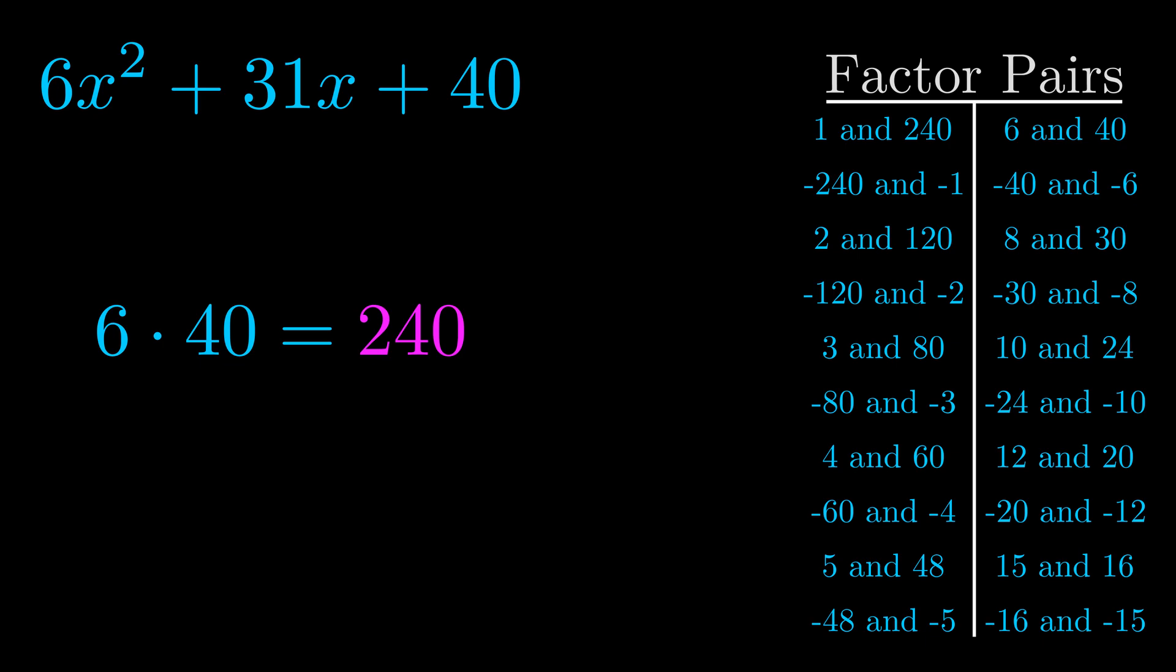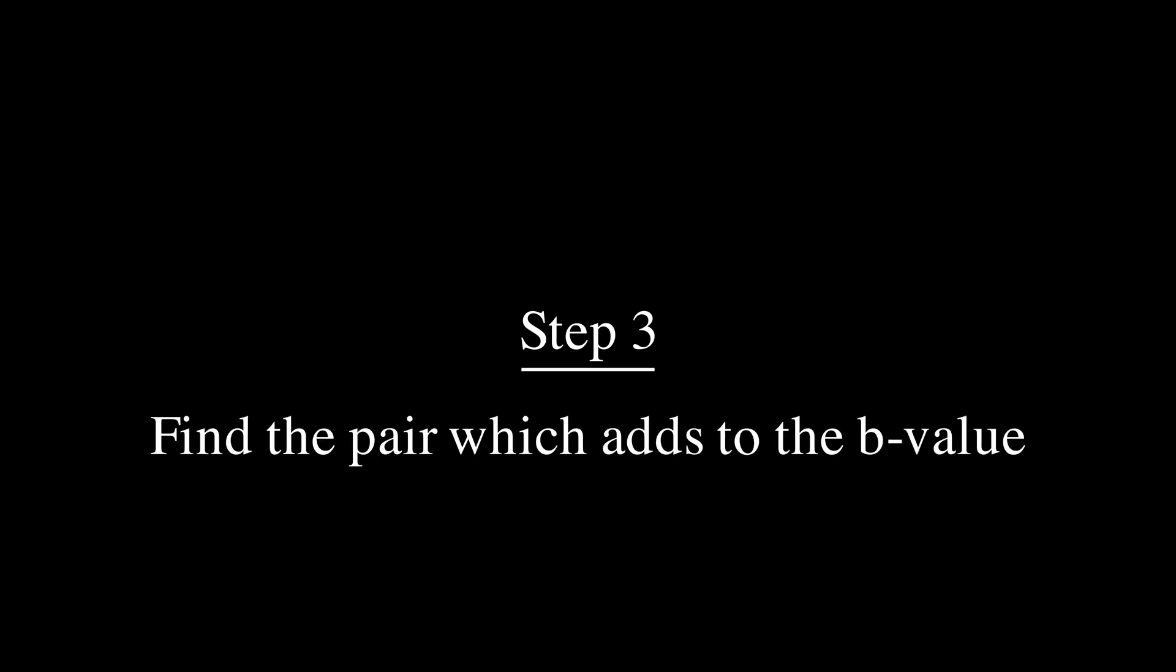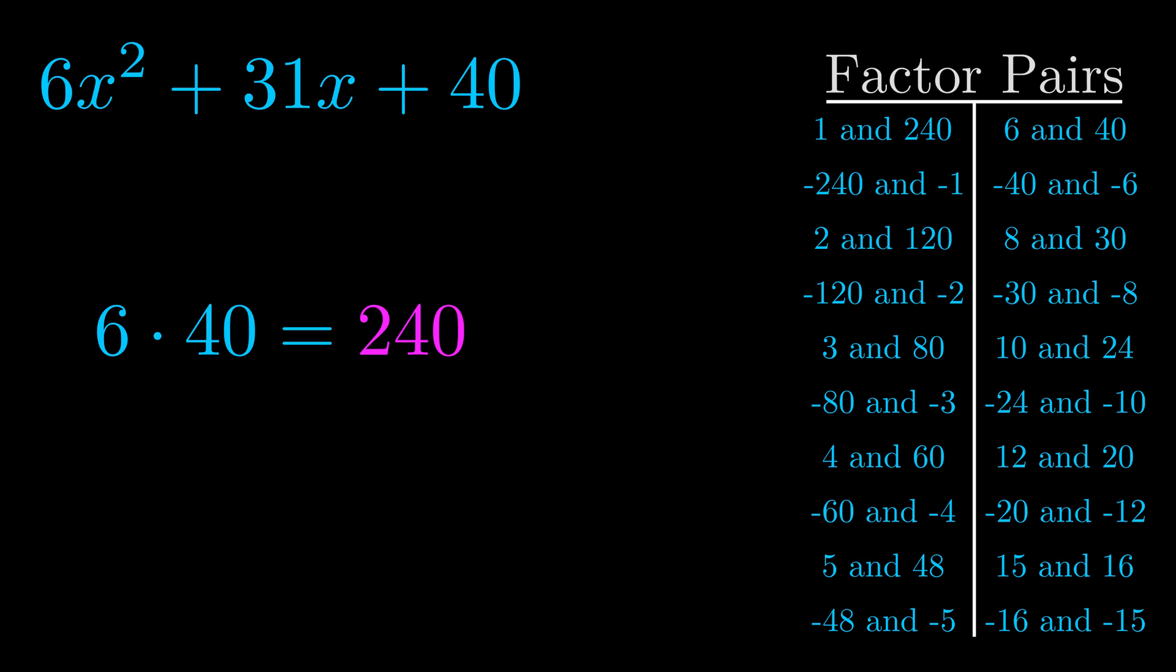Now once you have these factor pairs, the goal is to find which of these pairs adds to the b value. The b value is the coefficient on the x term. That's the middle term, the one that we haven't done anything with yet.